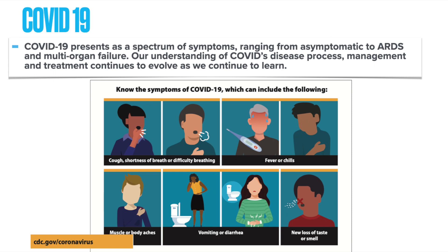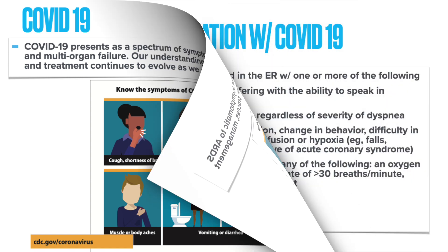COVID-19 presents as a spectrum of symptoms ranging from asymptomatic to acute respiratory distress syndrome and multi-organ failure. Our understanding of COVID's disease process, management, and treatment continues to evolve as we continue to learn. We've all been affected one way or another by this pandemic. For patients who test positive for COVID and are determined to be stable for discharge to home, they should be instructed to self-quarantine for 10 to 14 days from the onset of symptoms, and they should be 24 hours fever-free without the use of medications.